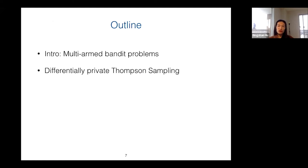Now I will go to the outline of today's talk. First I will introduce the multi-armed bandit problem, and then for the second part I will talk about the differentially private Thompson sampling learning algorithm.